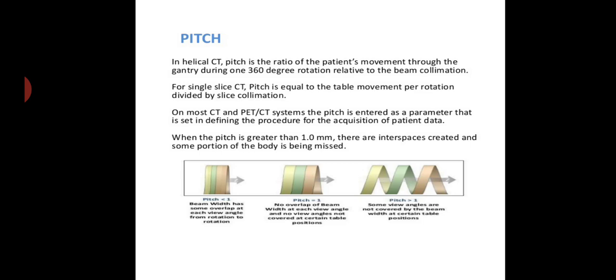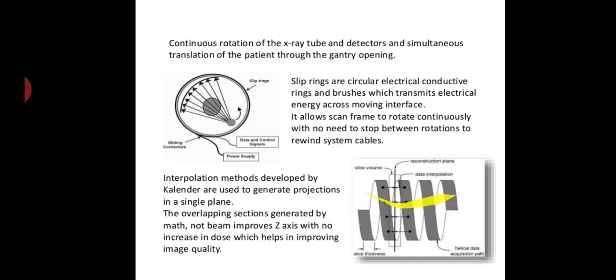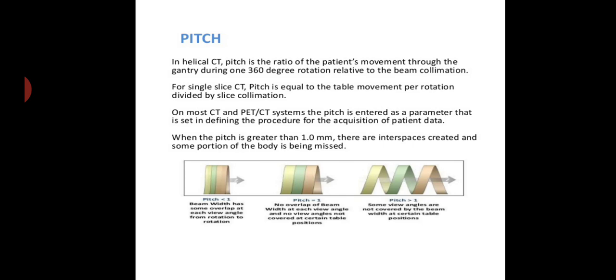When the pitch is smaller than 1, the beam width has some overlap at each view angle from rotation to rotation like this. When the pitch is equal to 1, no overlap of the beam at each view angle and no view angles not covered at certain table portions. When the pitch is greater than 1, like this, some view angles are not covered by the beam width at certain table positions.